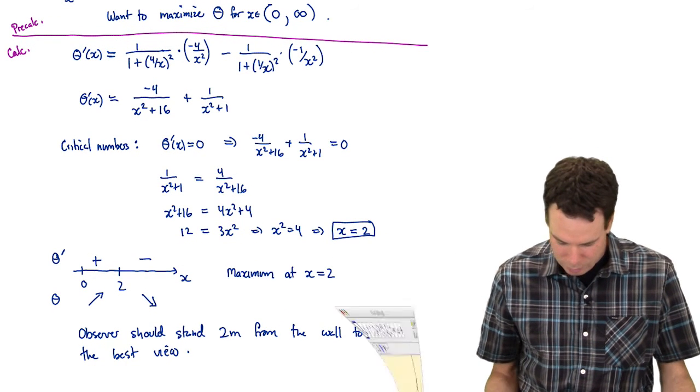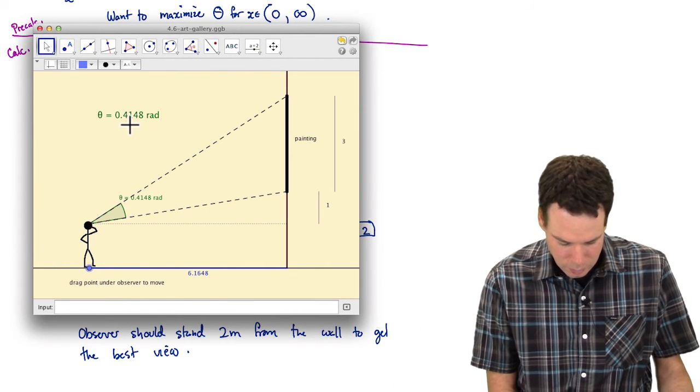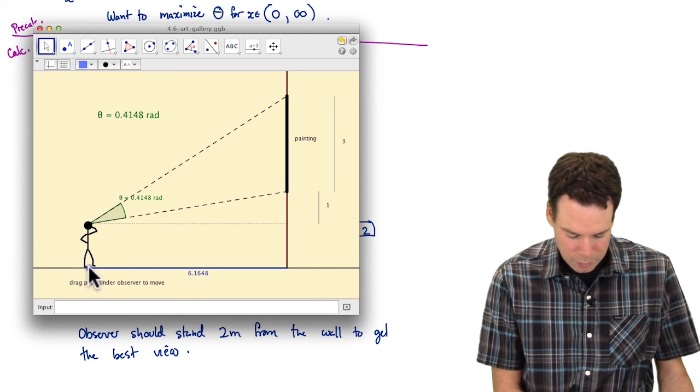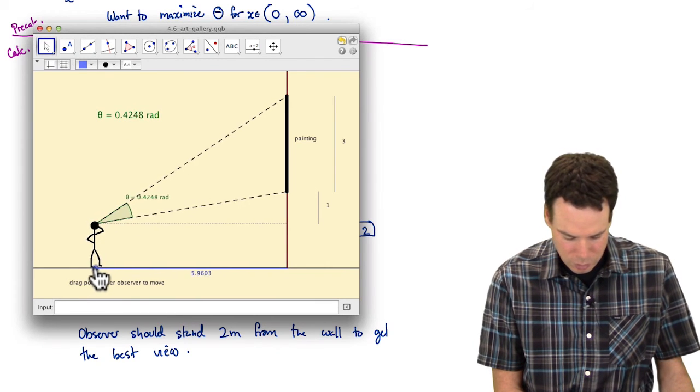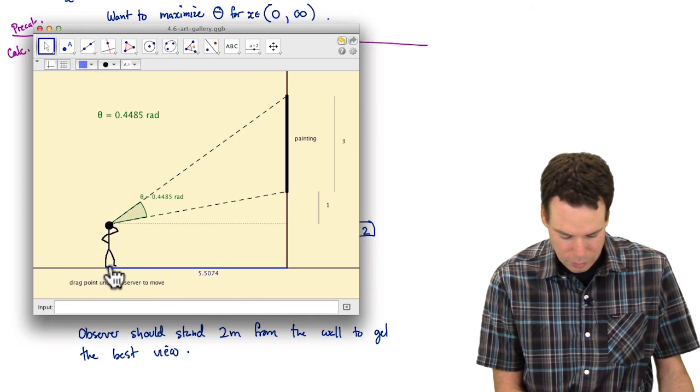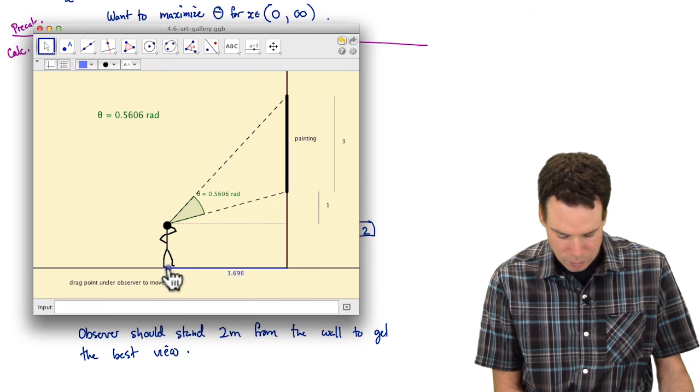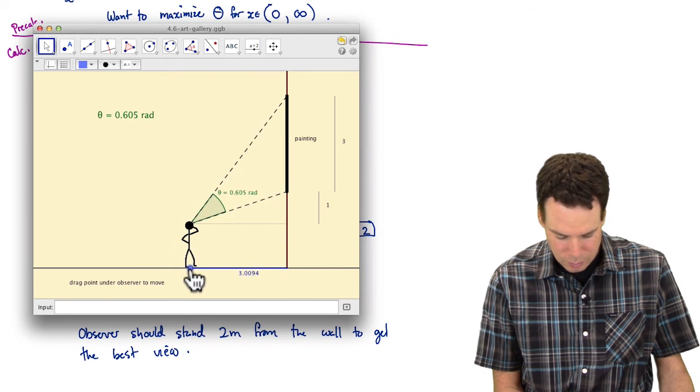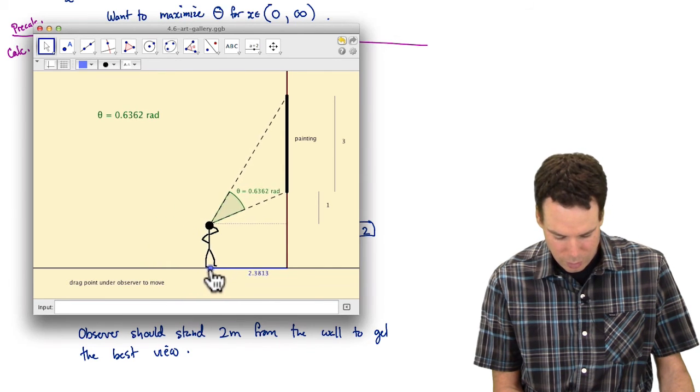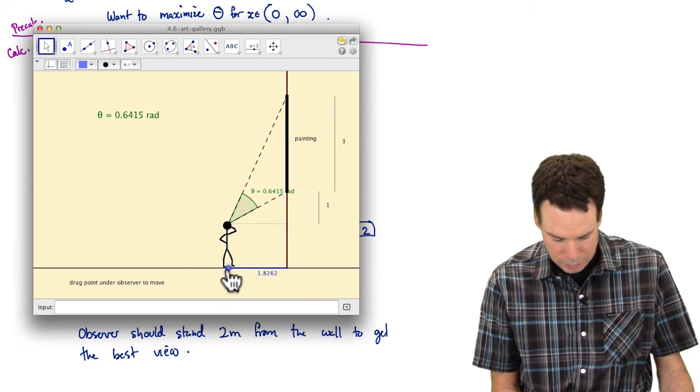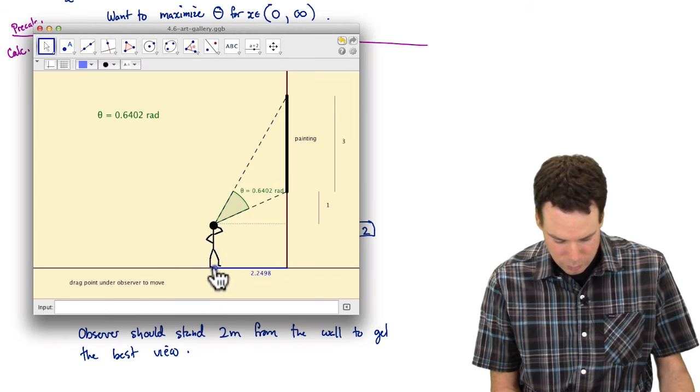So let's come back to our applet and see what we've got. So we're going to watch this number. Our best viewing angle means we want this number to be as big as possible. So you can see it's starting to increase. So we're getting a better viewing angle as we move closer to the wall. Still getting bigger, bigger, bigger, still bigger. We're getting a better viewing angle.